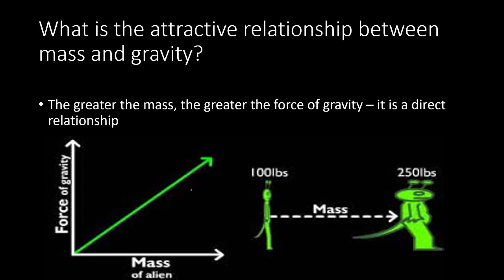Let's take a look at these two aliens. This alien is 100 pounds, so it has less mass than this alien over here, which means it has less gravitational force. But this alien over here is 250 pounds and has more mass, which means it will have more gravitational force. Once again, there's a direct relationship.